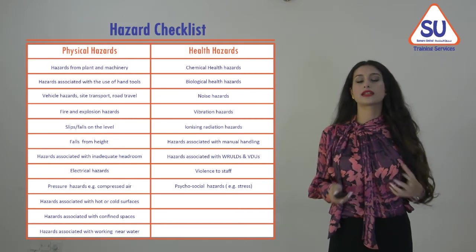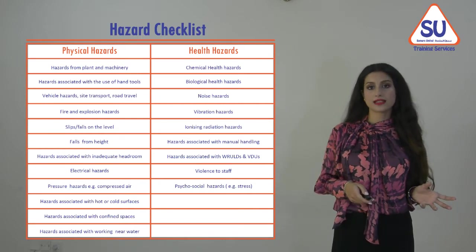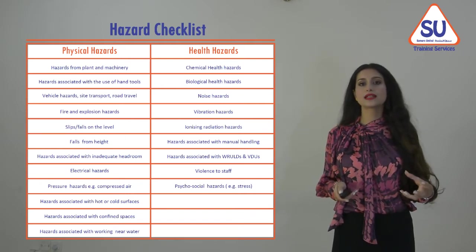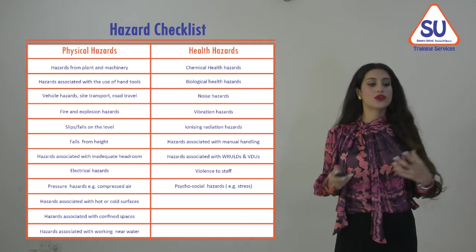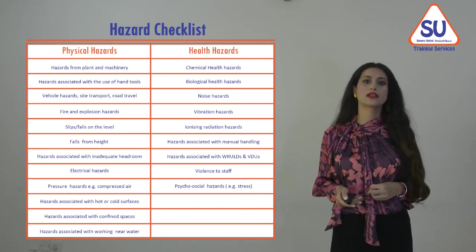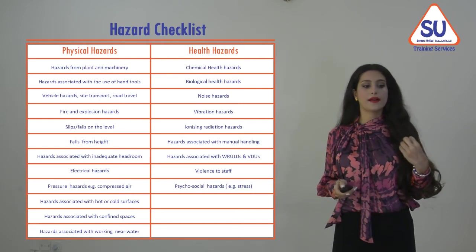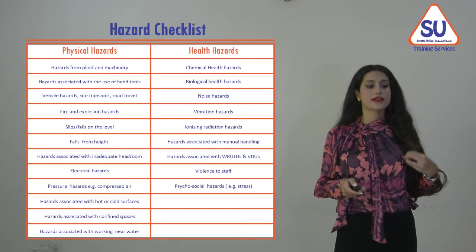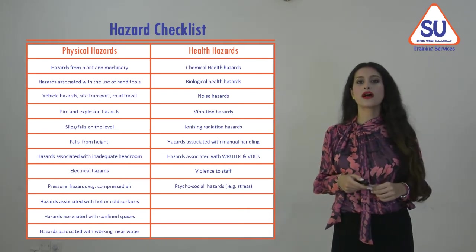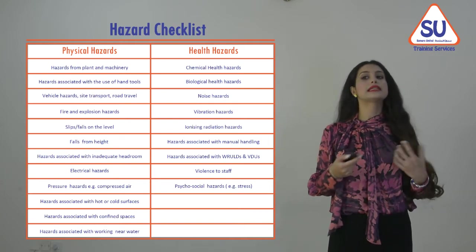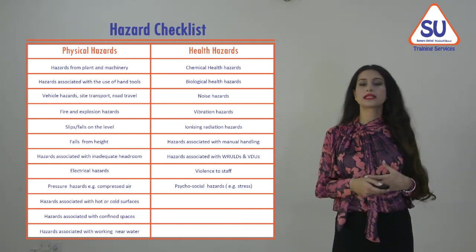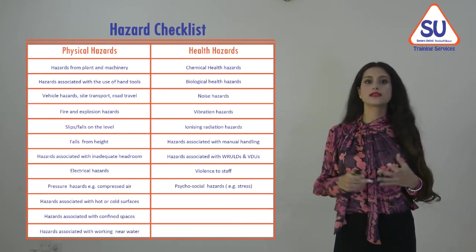Hazards can be categorized into two groups: physical hazards and health hazards. Physical hazards usually refer to hazards that cause accidents rather than diseases, covering examples like plants and machinery, mechanical hazards, hand tools, fire, falls from height, slips, trips and falls. Health hazards are associated with occupational diseases or syndromes, covering chemical hazards, biological agents, noise, vibration, and more.